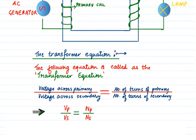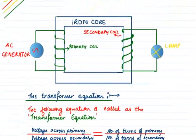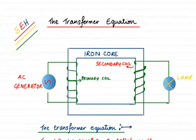This equation is used when you need to find either the number of turns of a coil or the voltage across a coil. In such problems, three out of the four quantities will be given and you apply the equation to find the fourth. Numericals will be covered in a dedicated video. I hope you have paused the video and taken down the equation.